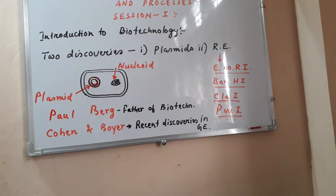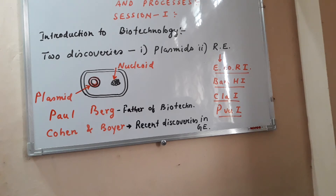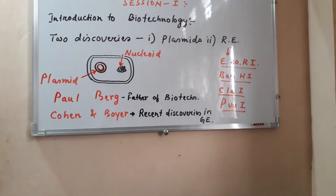Therefore, Paul Berg started the field of biotechnology — he is the founder of genetic engineering and recombinant DNA technology. Cohen and Boyer also performed similar discoveries; the most recent work in biotechnology and genetic engineering was due to them. They introduced a piece of foreign DNA into the plasmid of E. coli, transferring an antibiotic resistance gene from Salmonella typhimurium into E. coli bacteria.